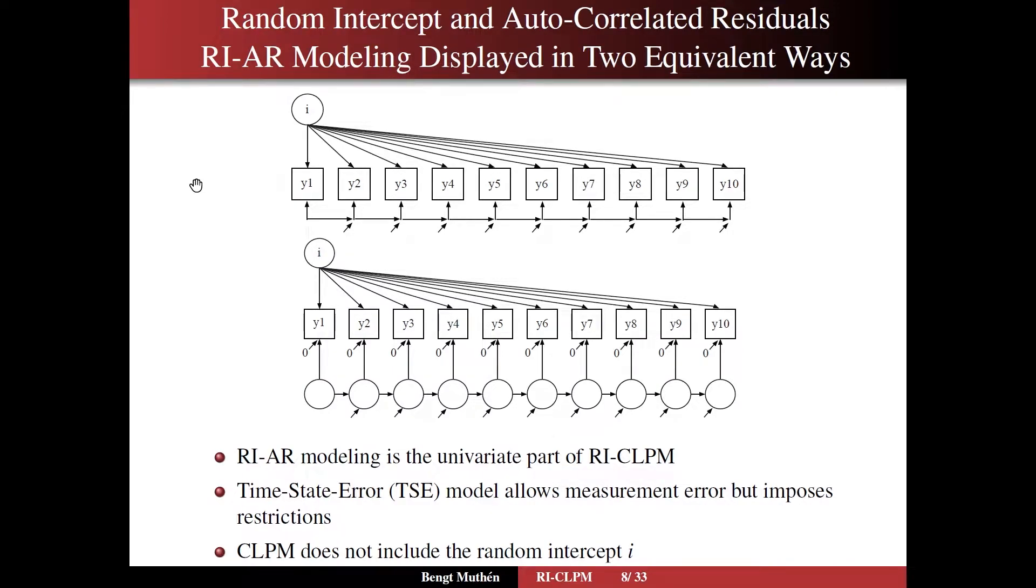On slide eight we return to the statistical tradition of random effects modeling in line with Laird and Ware with the addition of errors that have autoregressions among them. We have simplified it to have a random intercept only model in this case. I said that is the univariate part of the RICLPM model and we see that more clearly if we redraw the top model equivalently as the bottom model where instead of the residuals not having any variable, we introduce a factor that's measured by the observed variable with loading one and error zero. That's exactly what the residual is, right?